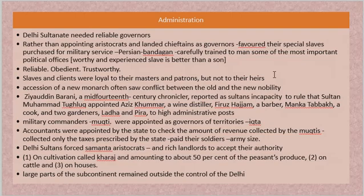The accountants ensured there was no revenue leakage and no excess taxation. Revenue leakage means the government asked to collect a tax but it was not being collected. Excess taxation means collecting more than prescribed and causing dissatisfaction among peasants. Accountants ensured only prescribed taxes were collected, salaries were paid to soldiers, and a nominal army was maintained at all times. The Delhi Sultans also forced the zamindars, samantha aristocrats, and rich landlords to accept their authority — to pay a portion of revenue, maintain an army, and ensure peasants were treated fairly.